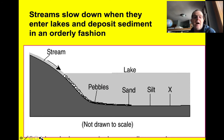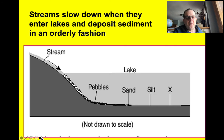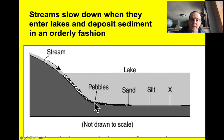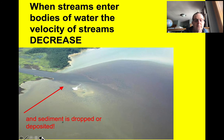Streams are slowed down when they enter lakes or the ocean, and they deposit sediment in an orderly fashion. This is the foundation of what's called delta formation. A stream or river enters a larger body of water moving fast — it drops out its pebbles, then slows and drops out its sand, slows further and drops out its silt, and finally drops out its clay.